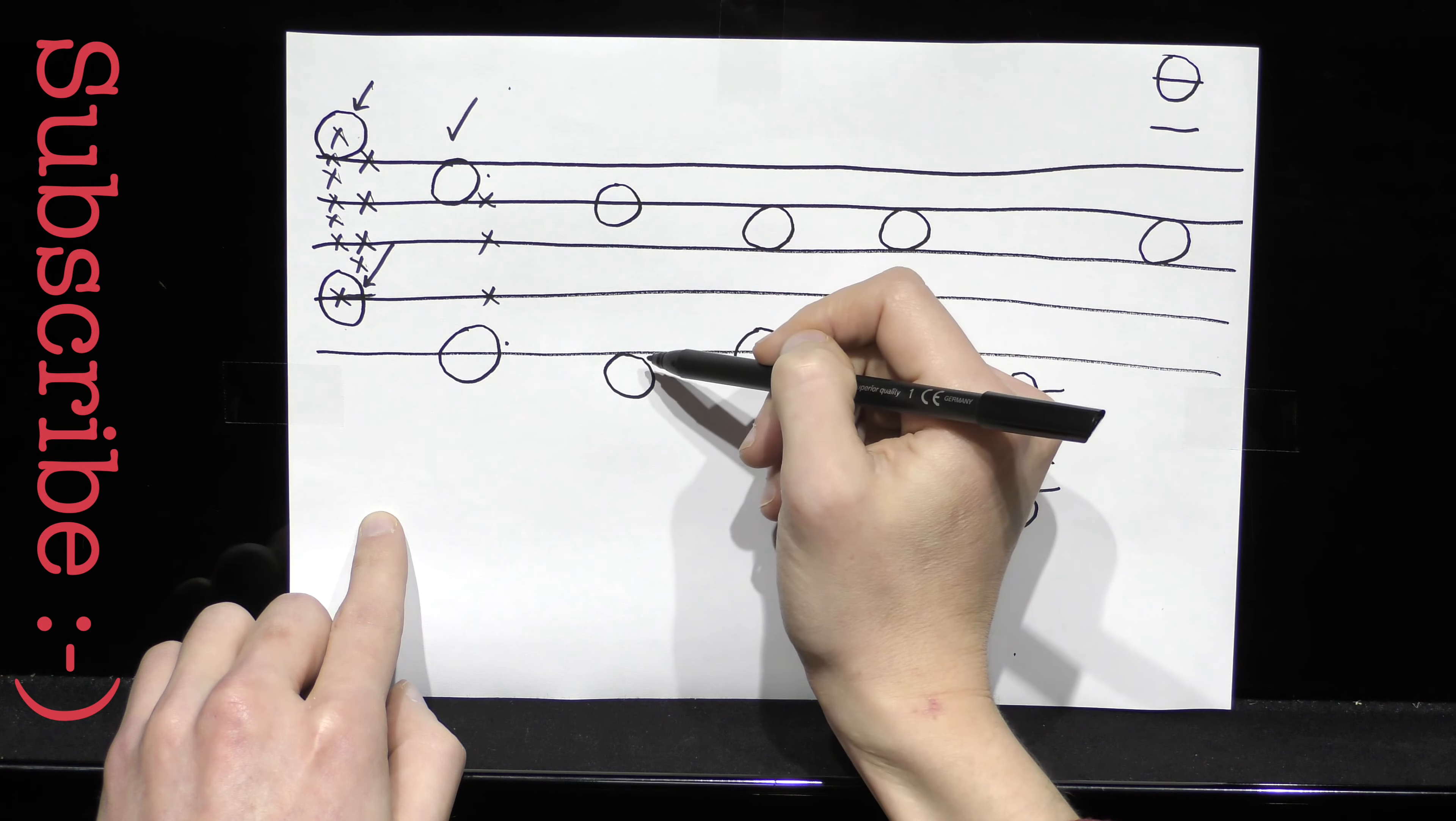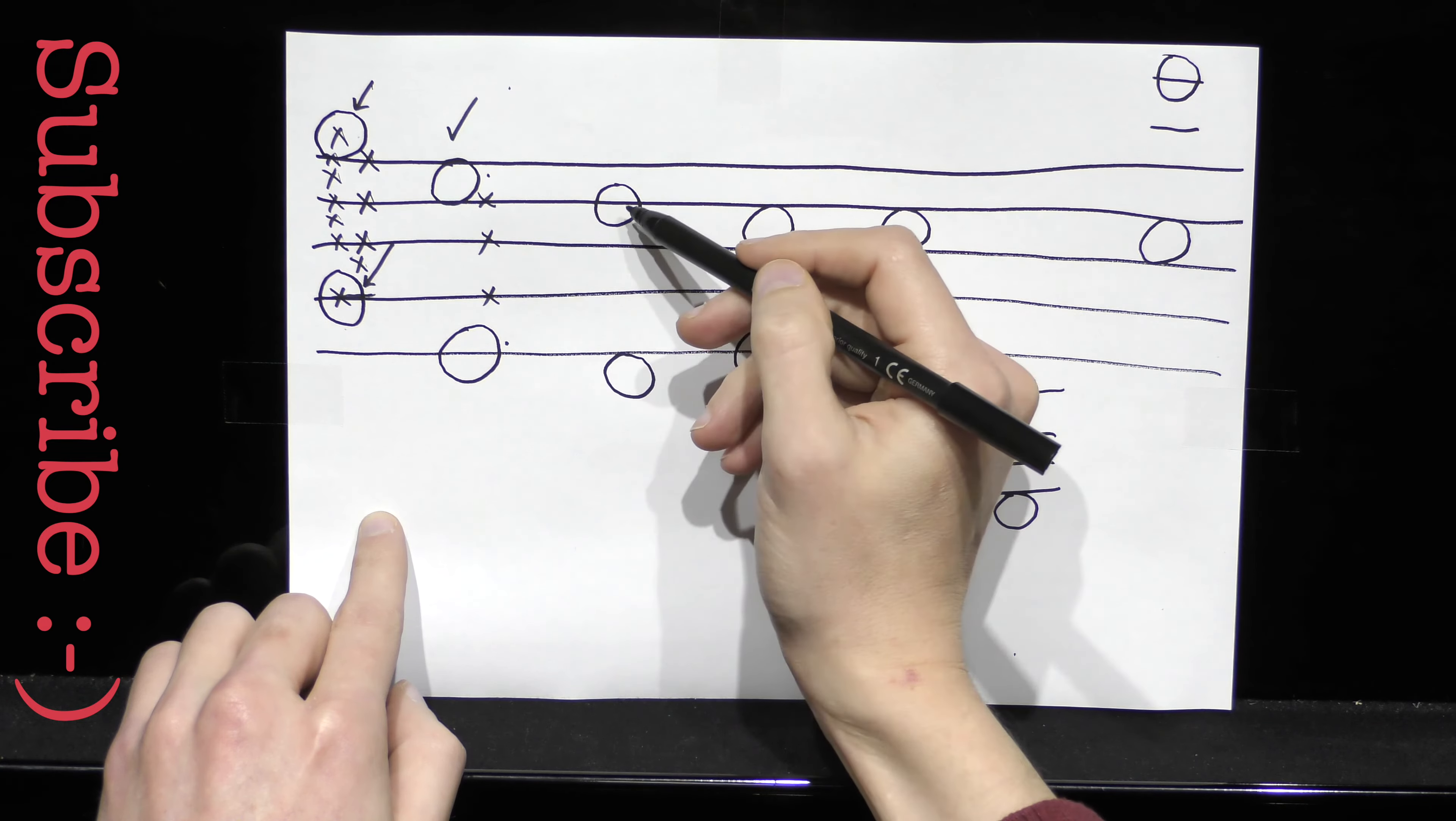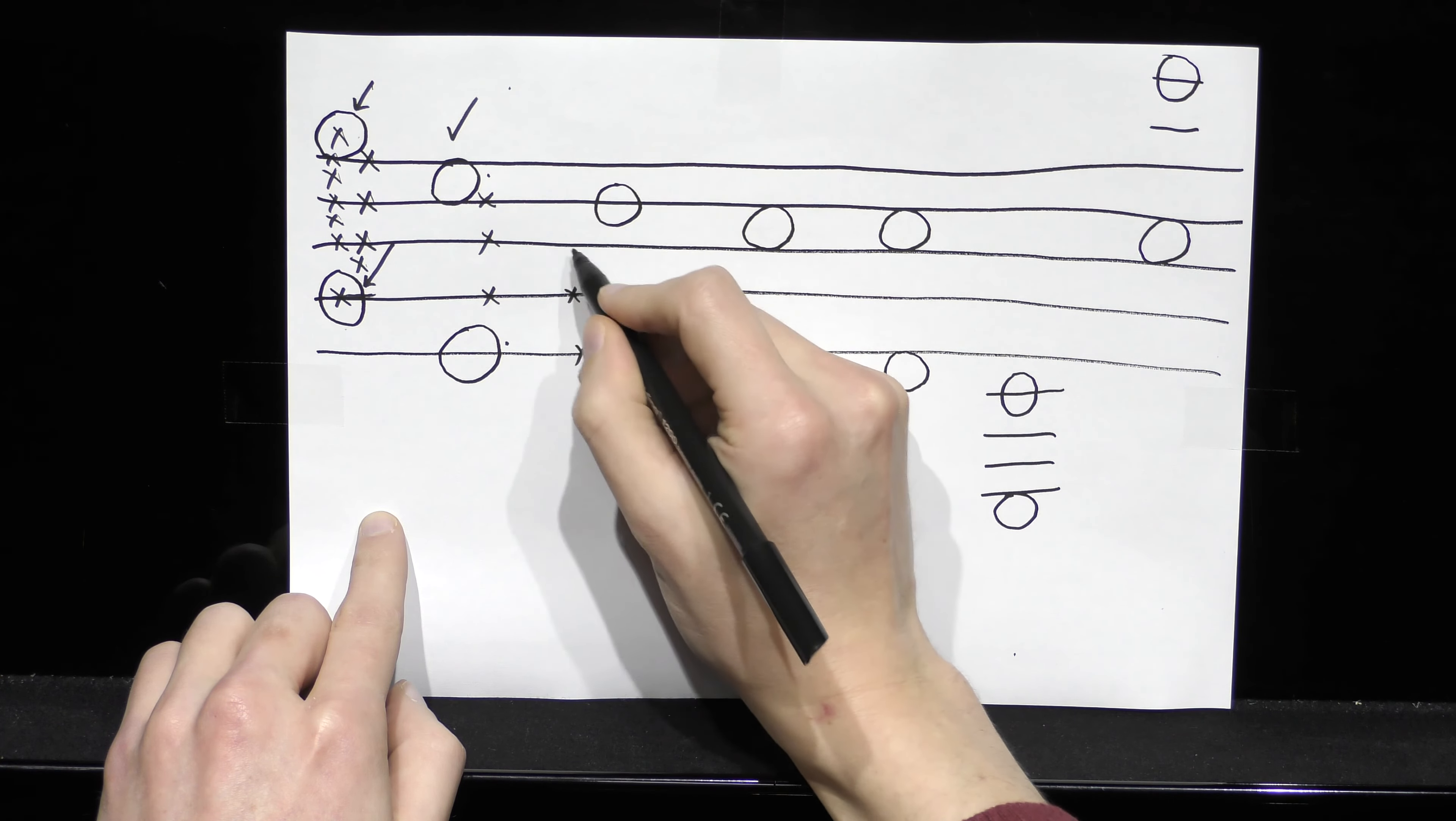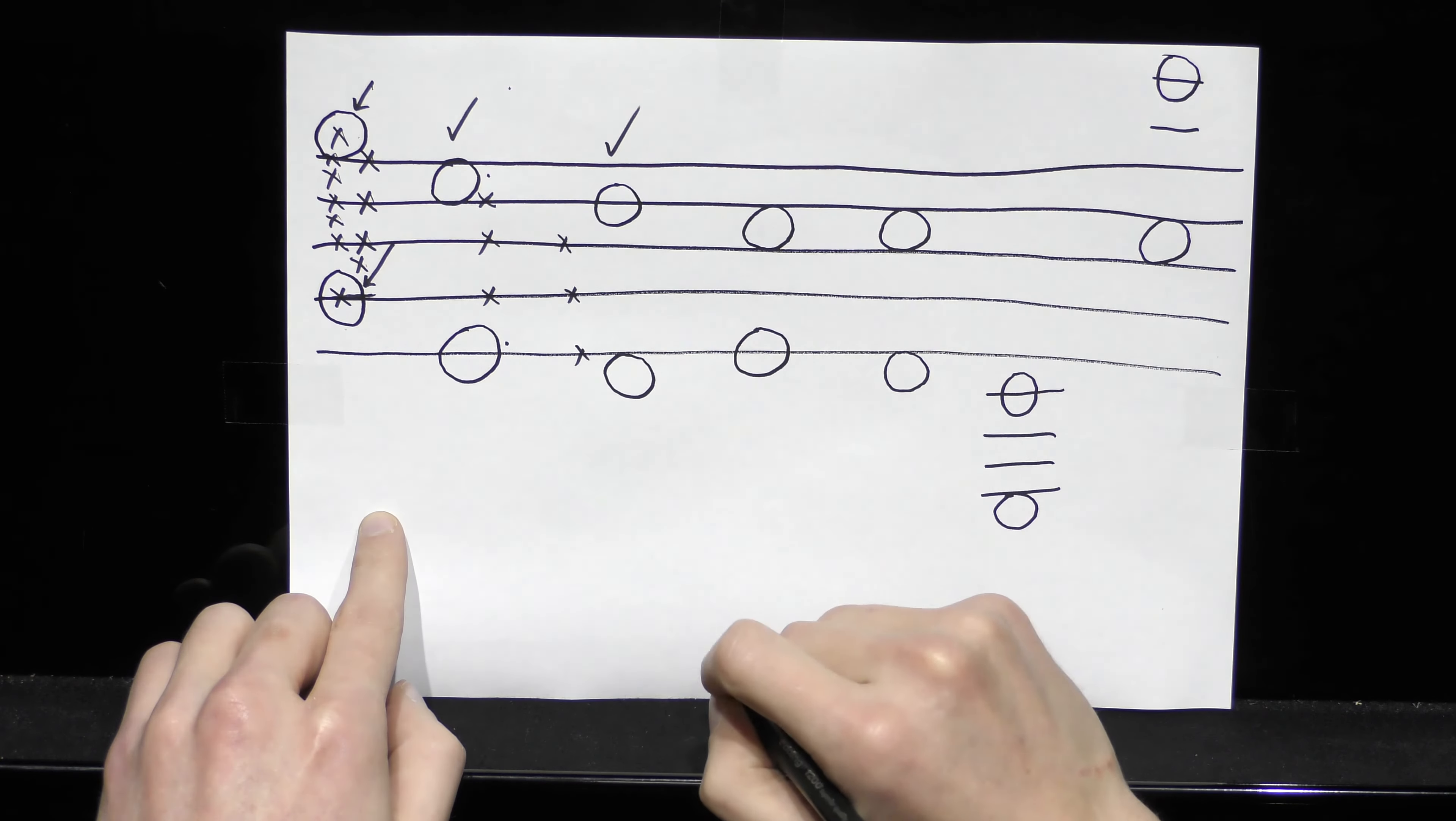Now here, I have one note on a line, this time it's the upper note, and one on a space, and I have one, two, three lines between, again, that must be an octave.